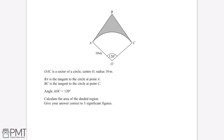The first thing we need to know for this question is that tangents to a circle are always at a right angle to the radius of the circle. Because both BA and BC are tangents to the circle, this means that angle BAO and angle BCO are both right angles. So we can mark this onto our diagram.